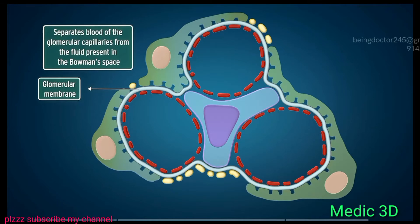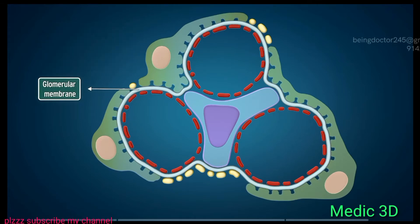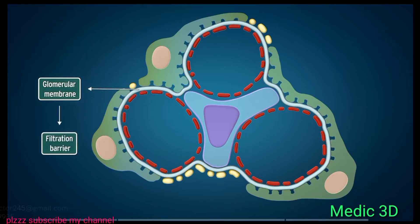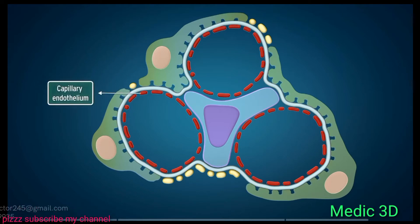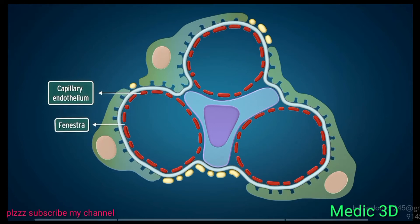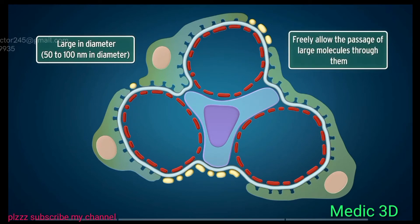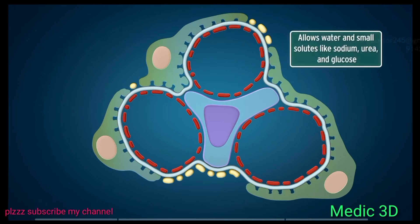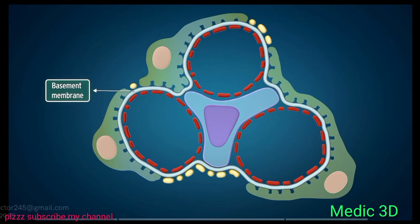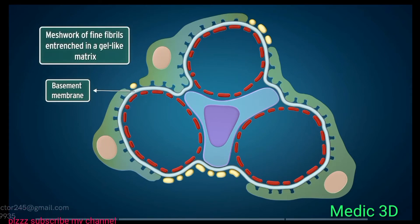The glomerular membrane refers to the membrane that separates blood of the glomerular capillaries from the fluid in Bowman's space. It is also called the filtration barrier and consists of three major layers. The capillary endothelium of glomerular capillaries is of fenestrated type, containing fenestrae — pores or windows — that are 50 to 100 nm in diameter. These large pores freely allow water and small solutes like sodium, urea, and glucose to pass through.